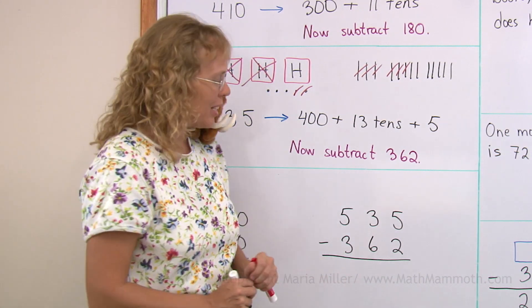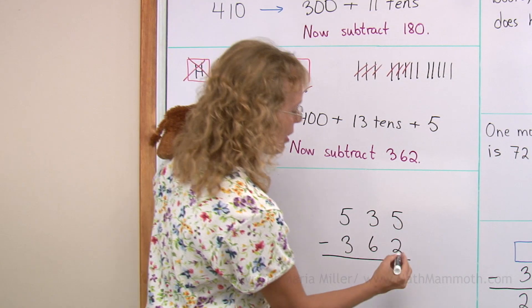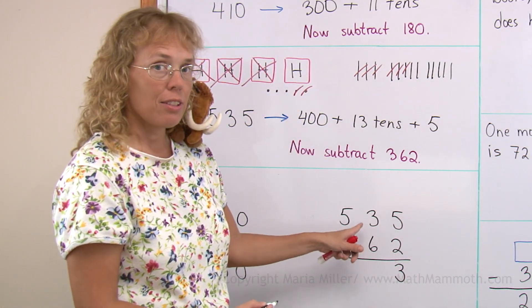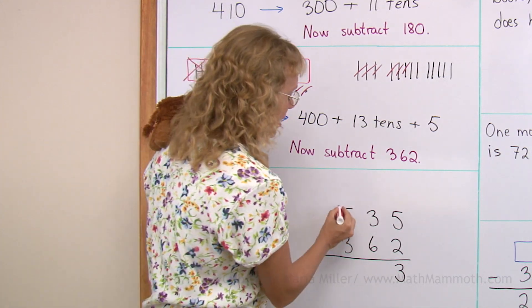Let's do it again. Once more. Five minus two. I can subtract in the ones. But in the tens, three minus six I cannot do. So regrouping is necessary.